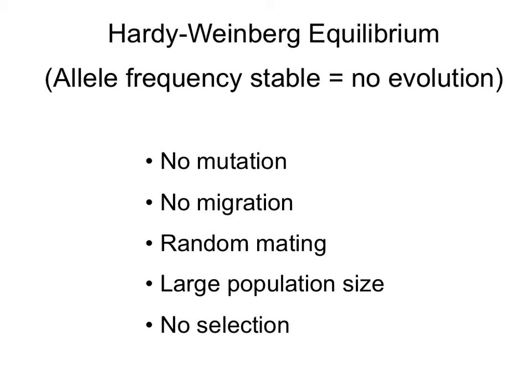For alleles to remain stable and for a population to be in Hardy-Weinberg equilibrium, there are several requirements. First, there is no mutation, so no alleles are changing. Second, there is no migration, so no individuals are moving out of or coming into the population. Third, it requires random mating, so no phenotype or genotype is favored in terms of mating — for example, all females wanting to mate with males with red feathers would violate random mating. Every genotype or phenotype has the same chances of mating as any other.